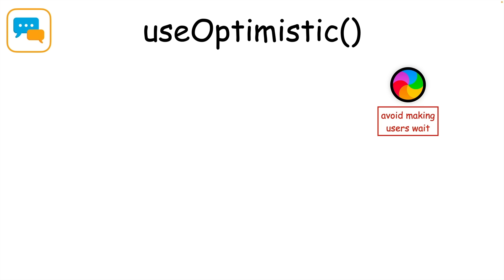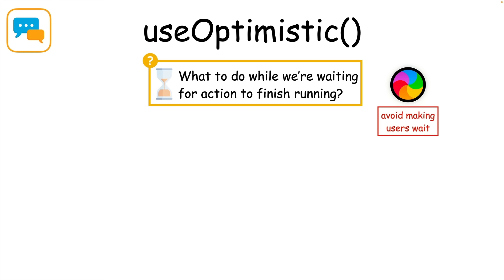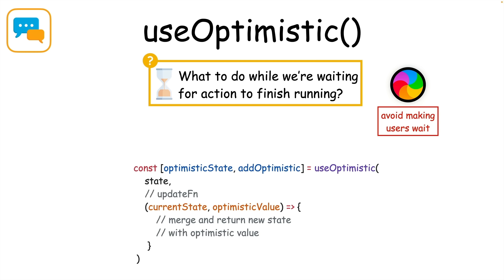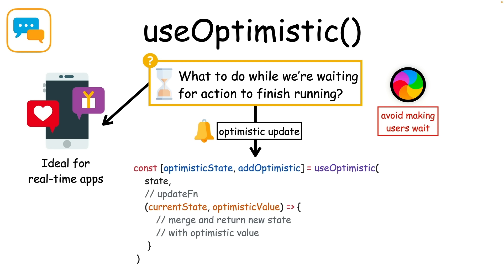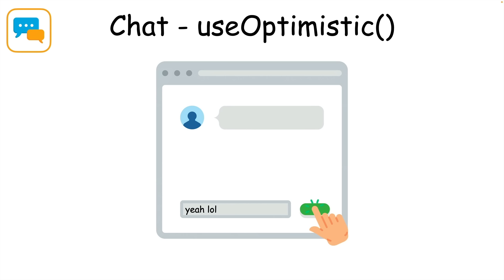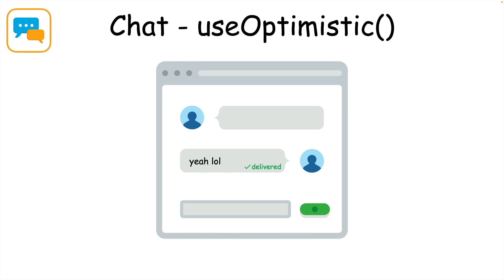But making the user wait for the result of an action isn't a great experience. So what can you do to fix it? This is a great use case for the new useOptimistic hook, which performs an optimistic update. It's ideal for real-time apps, such as a chat app, to immediately update the user interface with what the user submitted. If a user submits a message, you could perform an optimistic update and tell the user the message is being sent, and afterwards update it with the server state when it is actually added to the database.